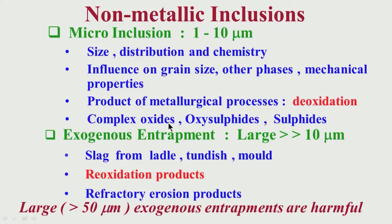These are basically oxides, and from sulphur, sulphides can be formed. We can have sulphides also. They are also normally very small in size in this range. There can be complex oxysulphides — a combination of sulphides and oxides. There can be different types of oxides; I am not only talking of alumina. There may be different oxides like TiO2, titanium oxide, or combinations of oxides. From metallurgical processes, whatever inclusions are generated are finer in size, normally in the range of 1 to 10 micron.